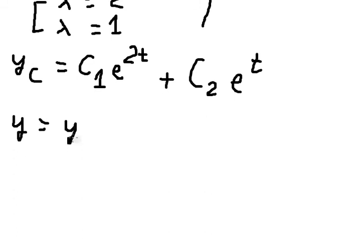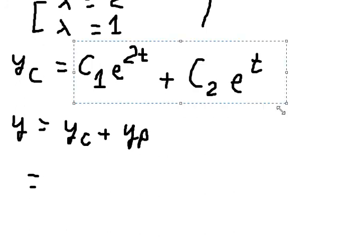So yp = (1/30)·e^(−4t). The general solution is y = yc + yp, which combines the complementary and particular solutions.